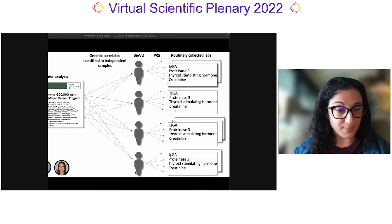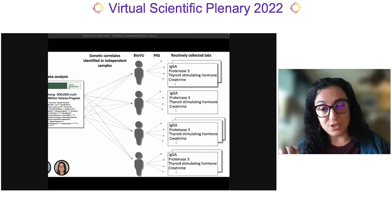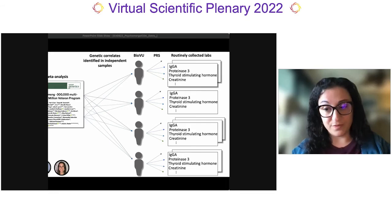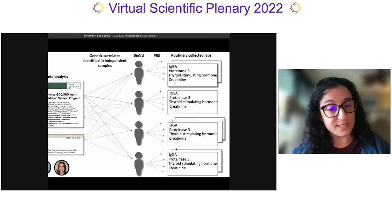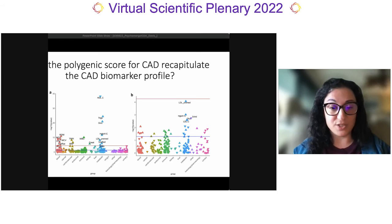We started with a proof-of-principle experiment: if we generated a polygenic score for LDL, HDL, and triglycerides in each person in the Vanderbilt Biobank, BioVU, and tested that score against all clinically measured labs, would we detect the referent lab? Indeed, we found that each polygenic score was robustly associated with the referent lab. I want to mention results from a study of the genetic risk score for coronary artery disease, or CAD — our primary question was: can the genetic risk for CAD recapitulate the CAD biomarker profile? We tested that in our LabWAS framework.